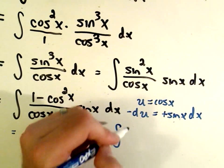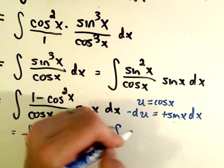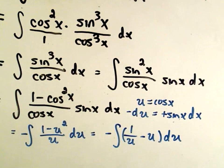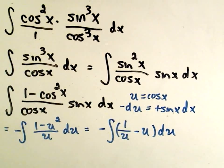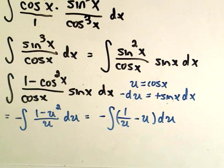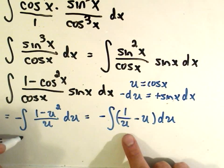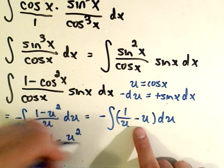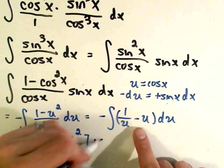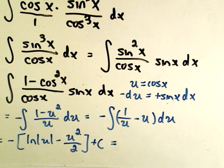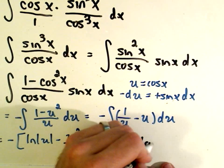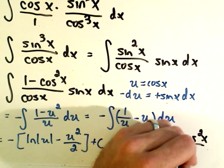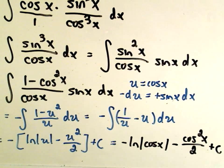My negative is up front. I can now break this up algebraically as 1/u - u du. Now we're almost there. If you integrate 1/u, you'll get the natural logarithm of u. If you integrate u to the first, you'll get u²/2 plus c. Then again, the last thing we need to do is just replace. So I'll have -ln of u, which is cos x, minus u, which is cos²x/2 plus c.